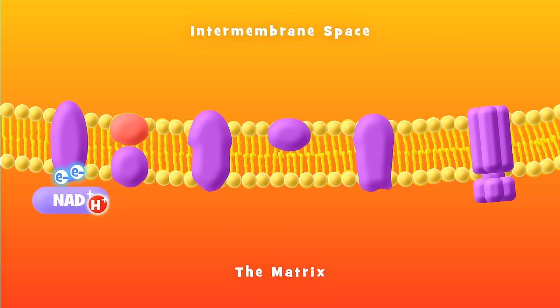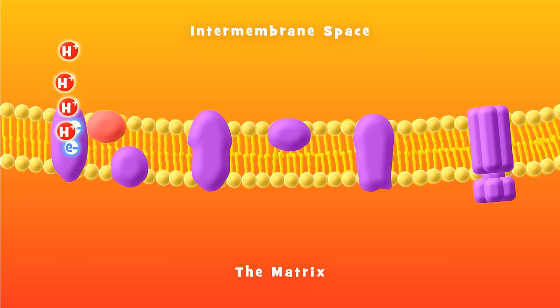As the electrons move through this protein complex, energy is gradually released, and this energy is used to pump hydrogen ions, or protons, across the inner membrane, from the matrix into the intermembrane space.